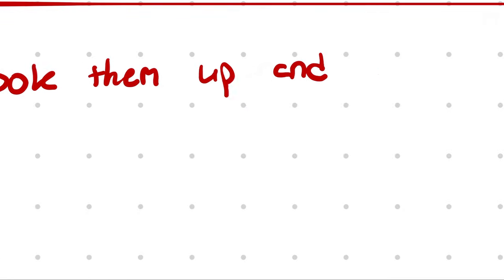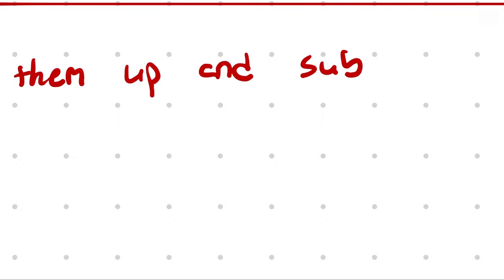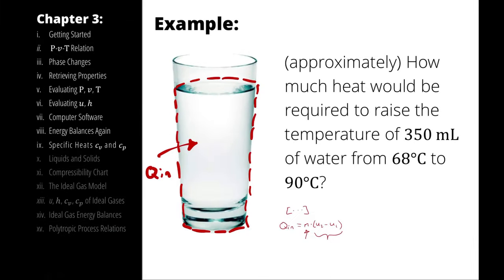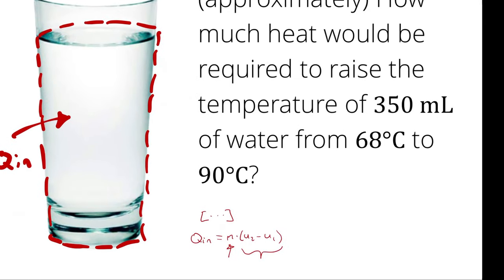Option one is to look them up and subtract them. This is what we've done so far. We have two state points: one at 68 degrees Celsius, the other at 90 degrees Celsius. We could presumably look up an internal energy. The problem is we don't actually have enough information to perform the lookup properly — we don't know another independent intensive property, which would be required to fix the state. We just have a temperature.